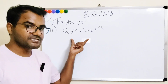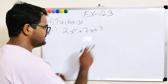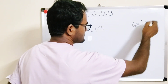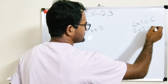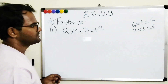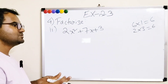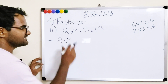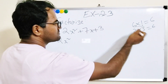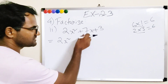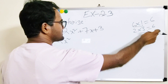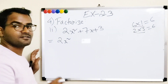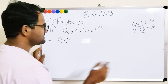Now number 2. We again have 3 terms. First, multiply the first and last numbers: 2 into 3 gives 6. The factors of 6 are: 6×1, 1×6, 2×3, 3×2. We need a pair that multiplies to 6 and adds or subtracts to 7.